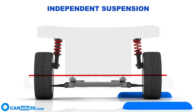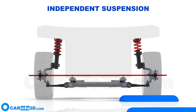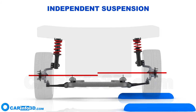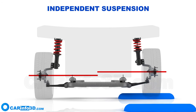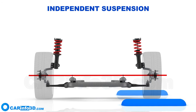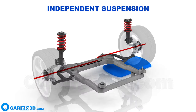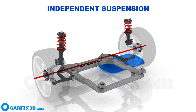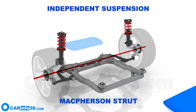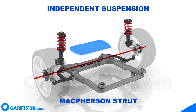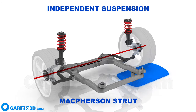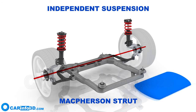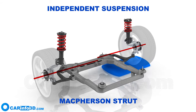An independent suspension system is a system in which two wheels of an axle are independent of each other. When the car goes over a bump, one of the wheels can change its position without affecting the other wheel. Different types of independent suspension systems are possible, with the McPherson strut being the most popular. The majority of current automobiles have independent suspension systems on the front axle, and middle and top-tier automobiles frequently feature them on the rear axle as well.